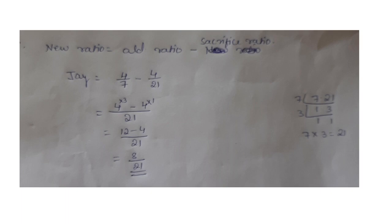J's new ratio: Old ratio 4/7 minus sacrifice ratio 4/21. That gives us 12/21 − 4/21 = 8/21. So J's new ratio is 8/21.